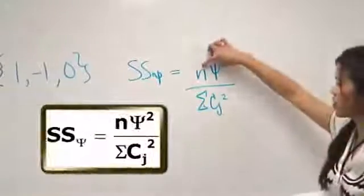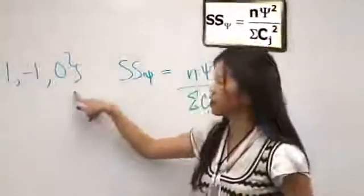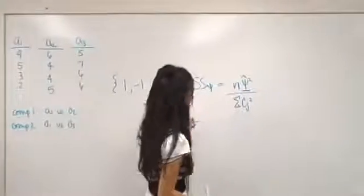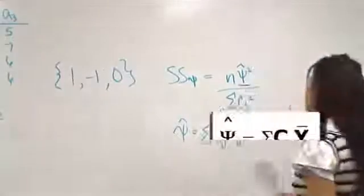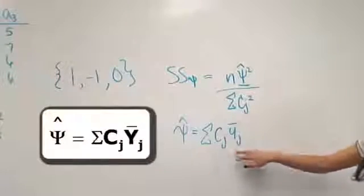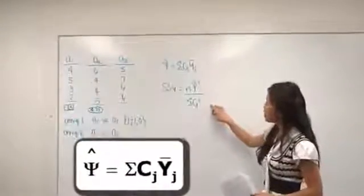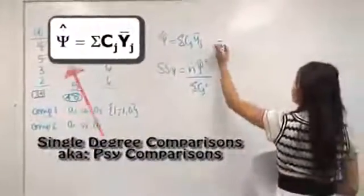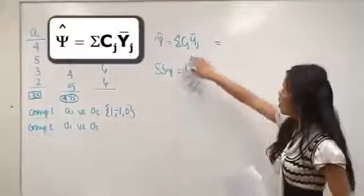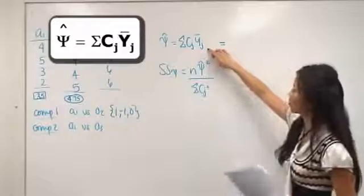N is equal to the number of subjects per group. Psi is what we're going to find, and this is the sum of all our coefficients squared. The second formula we need — since we don't know psi yet — is the sum of all our coefficients multiplied by the means of our groups. So these are the two equations I need, and you can get those from your book. We're going to do the psi calculation first: sum of all coefficients times the group means.